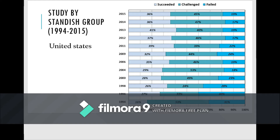The Standish Group study from 1994 to 2015 has three categories: Failure, Succeed, and Challenge. Failure means the project is not complete — the functionalities will not work, the work will not be done, the system will not run. If the system does not run, it is considered a failure.